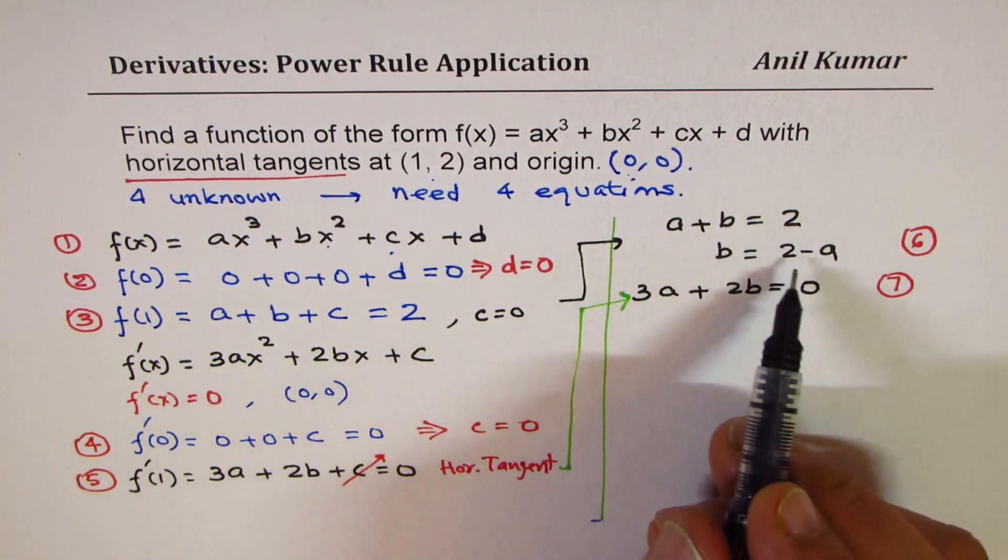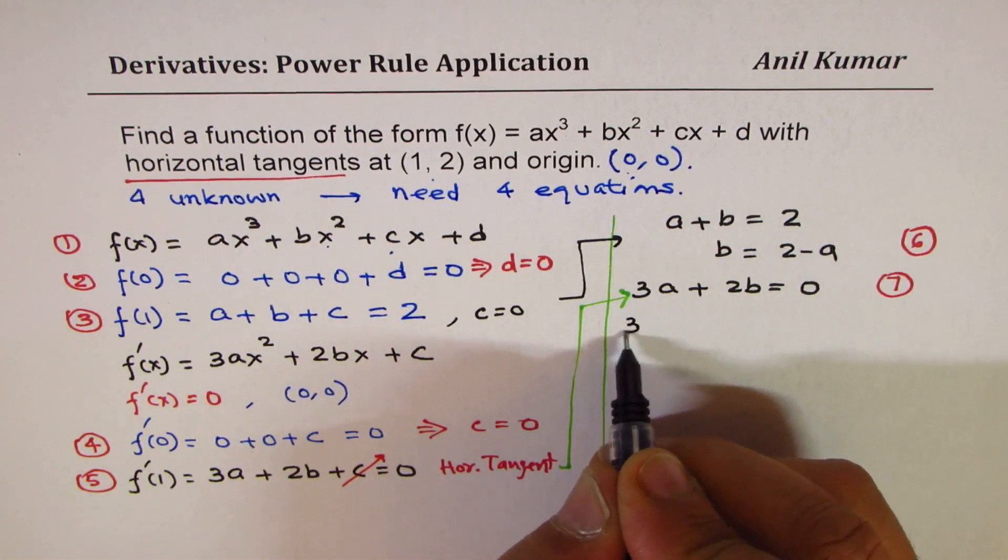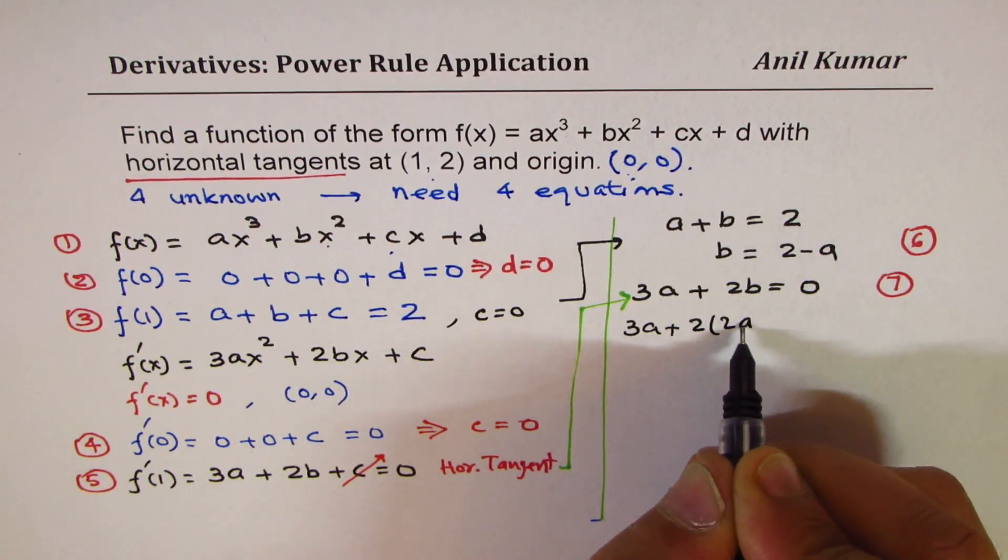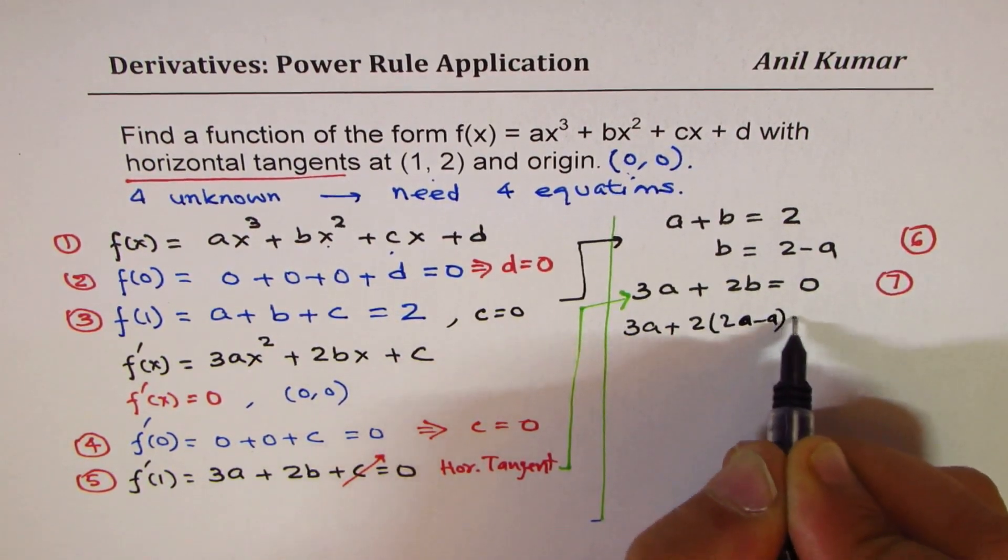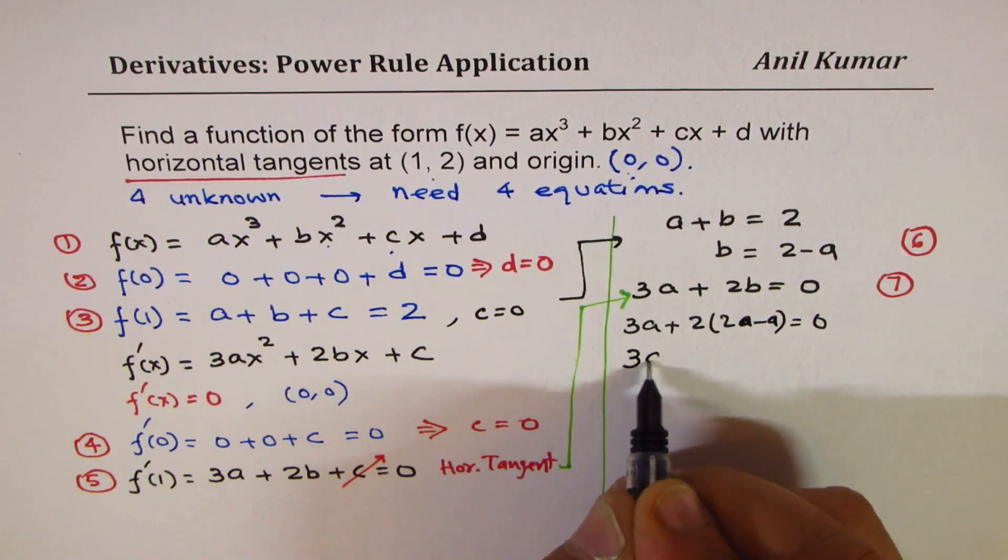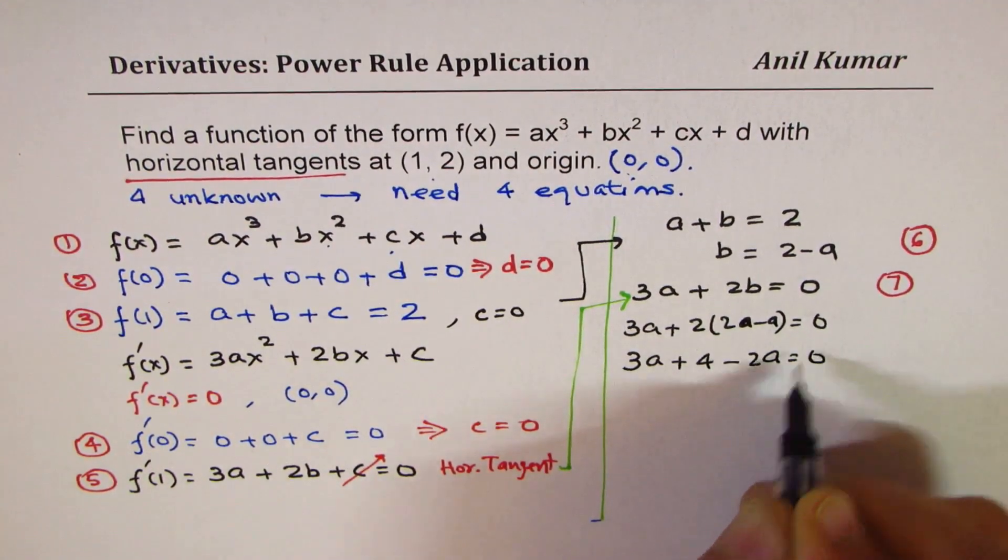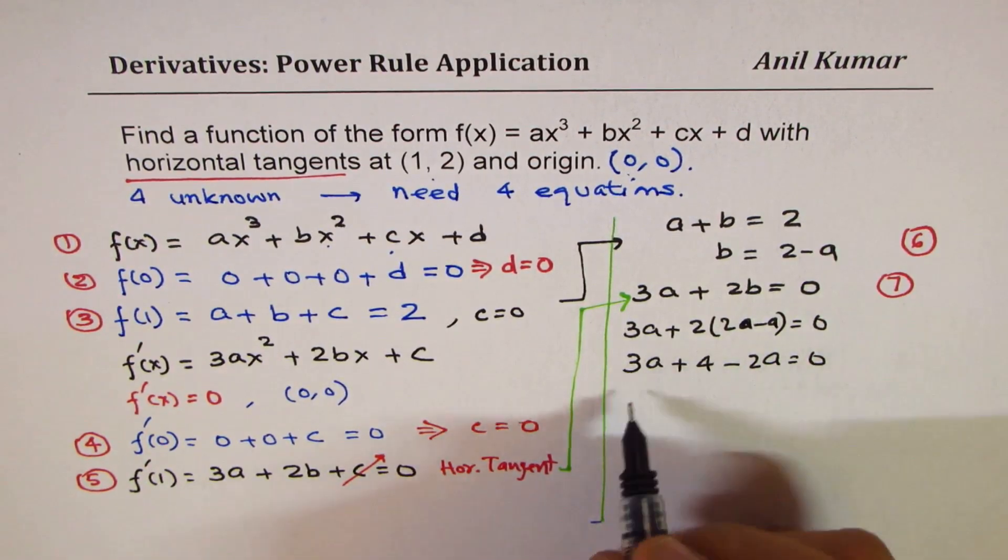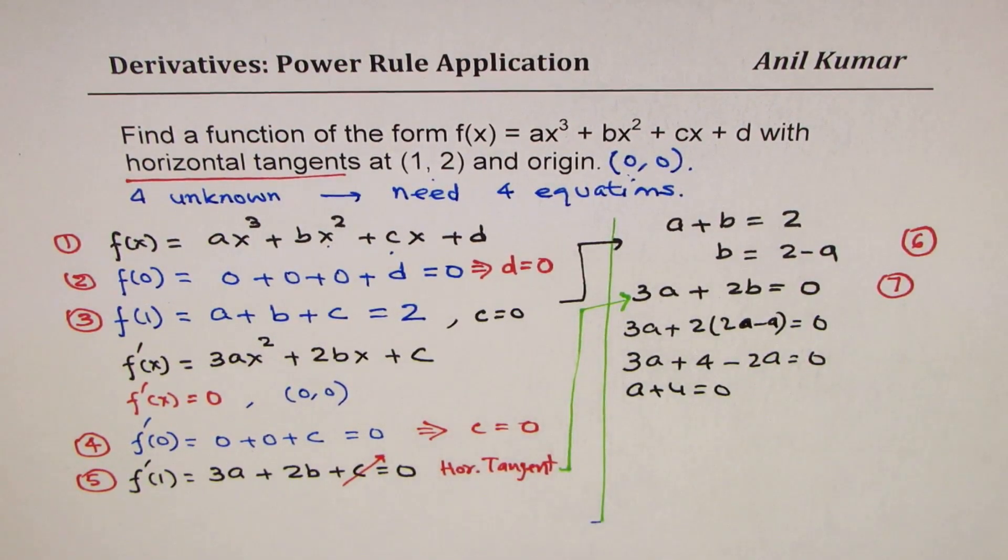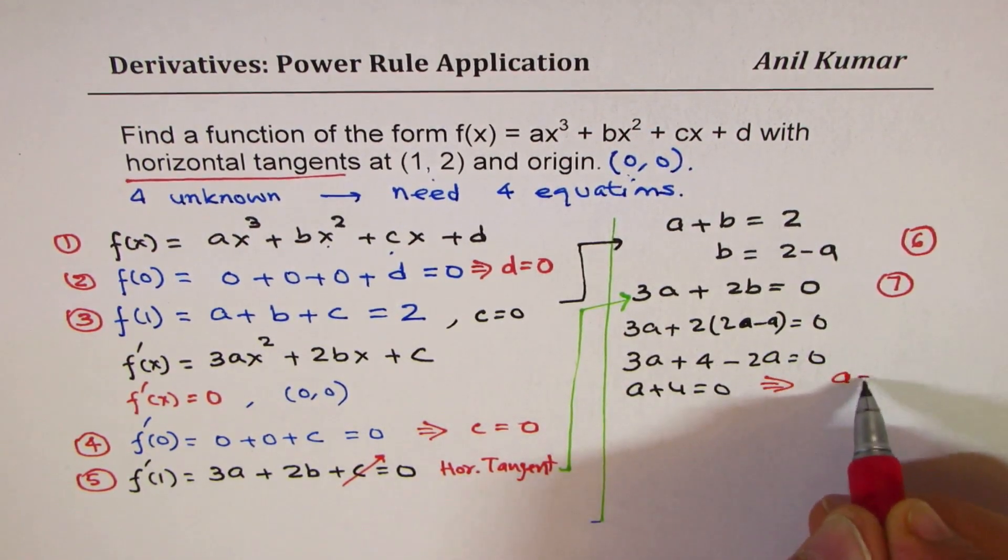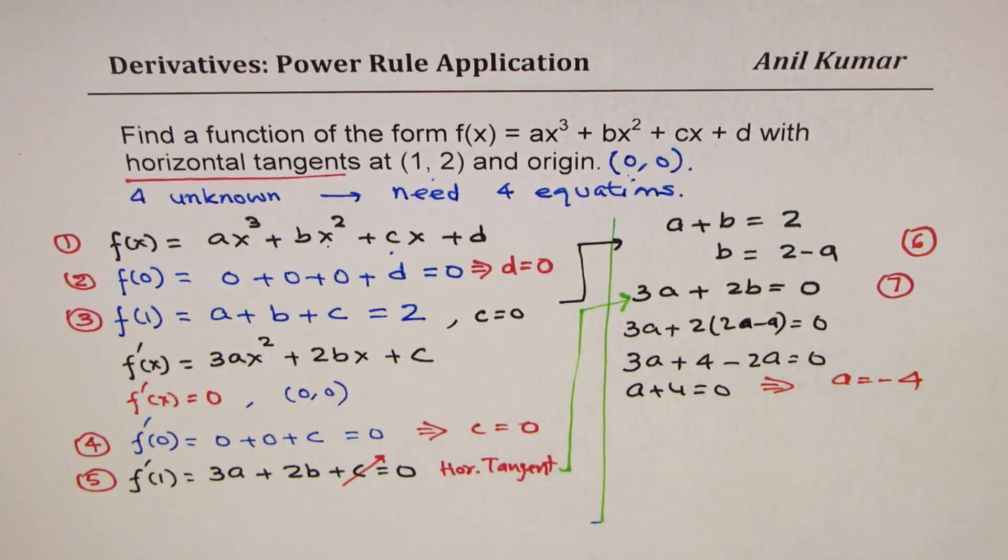Let us substitute b as 2 minus a here. So we get 3a plus 2 times (2 minus a) equals to 0, which gives me 3a plus 4 minus 2a equals to 0, and that gives me a plus 4 equals to 0. And solving this, we get a equals to minus 4.